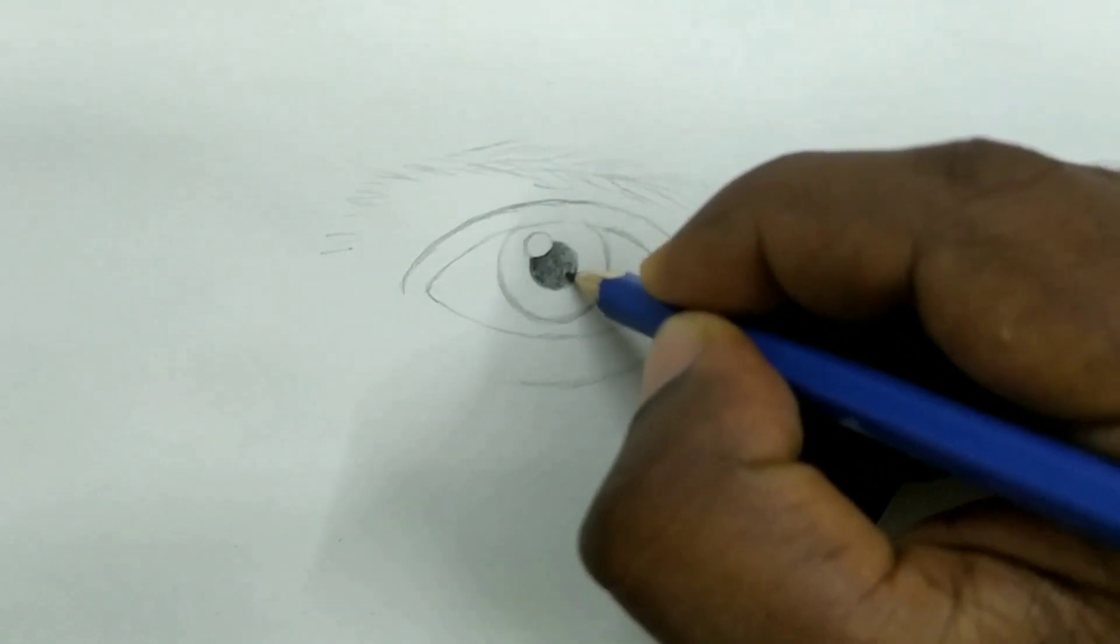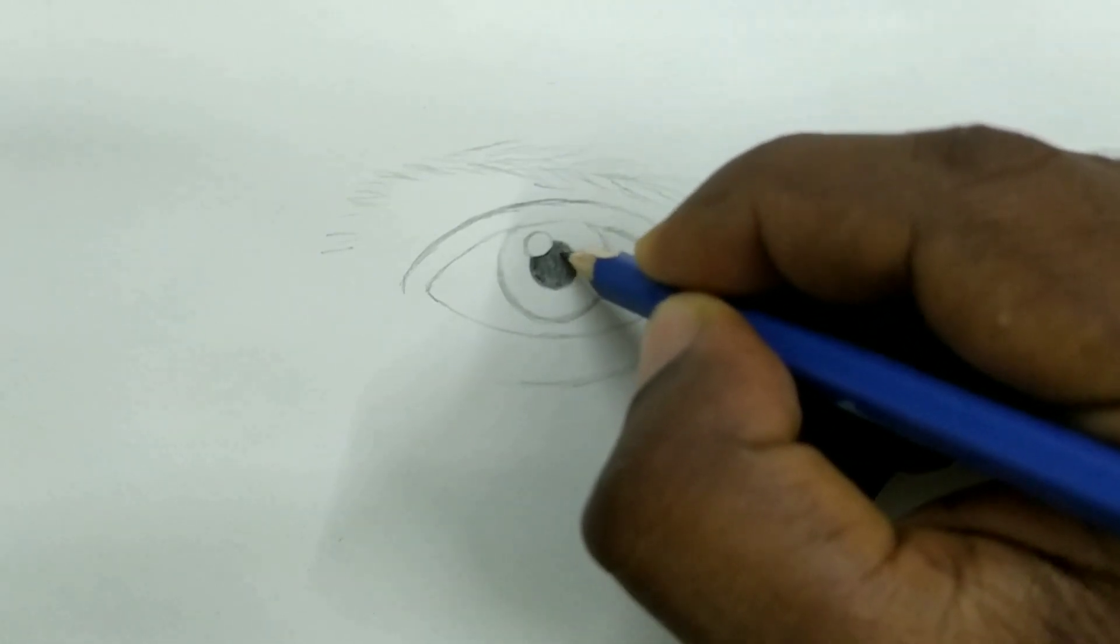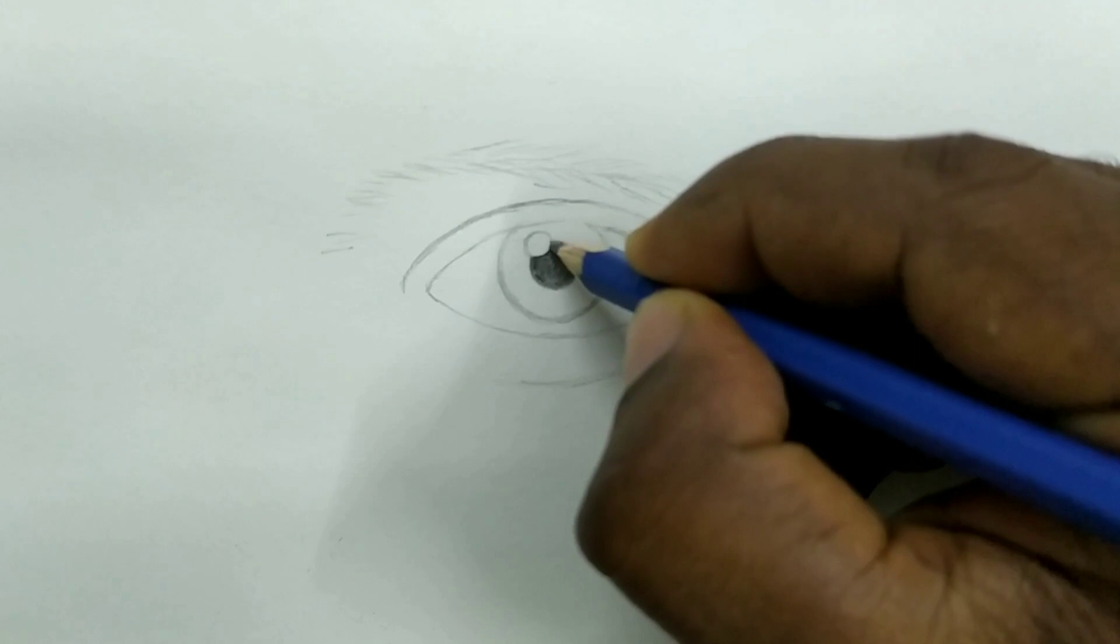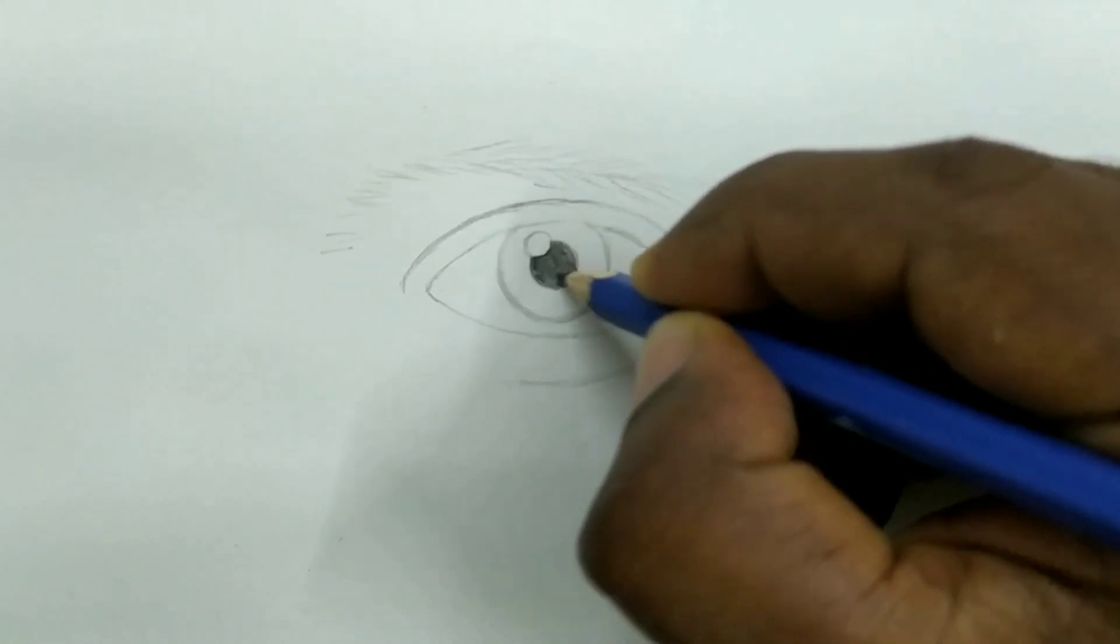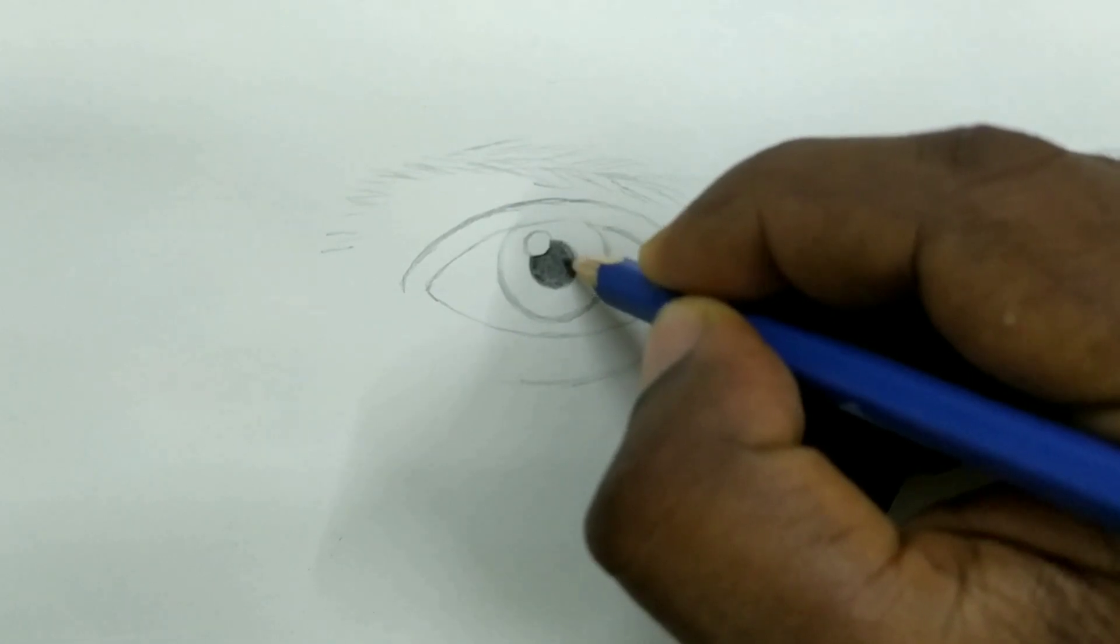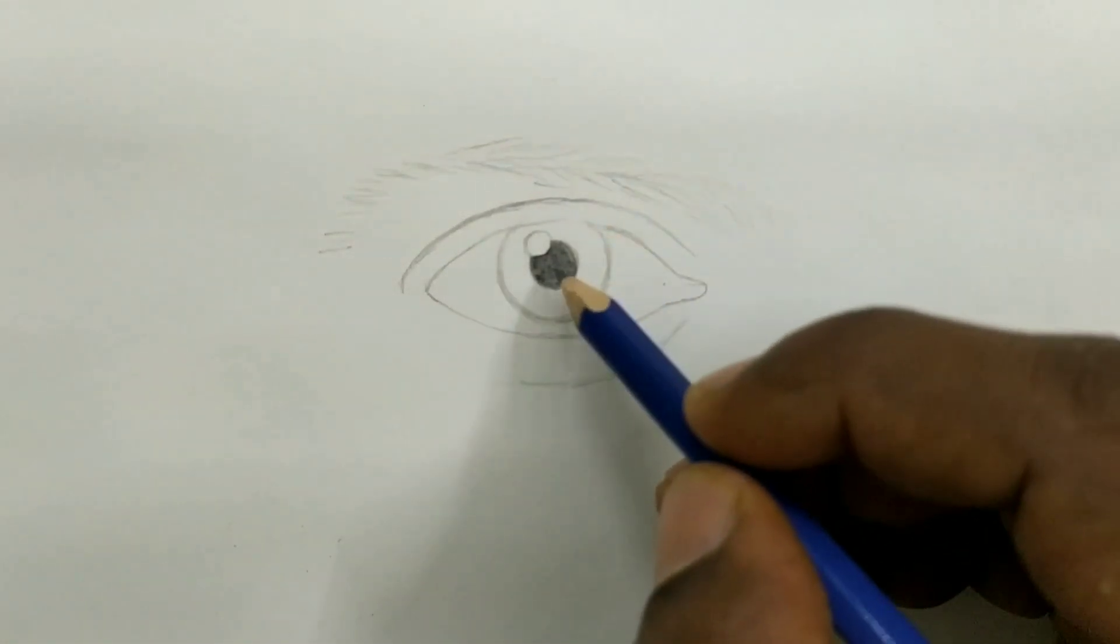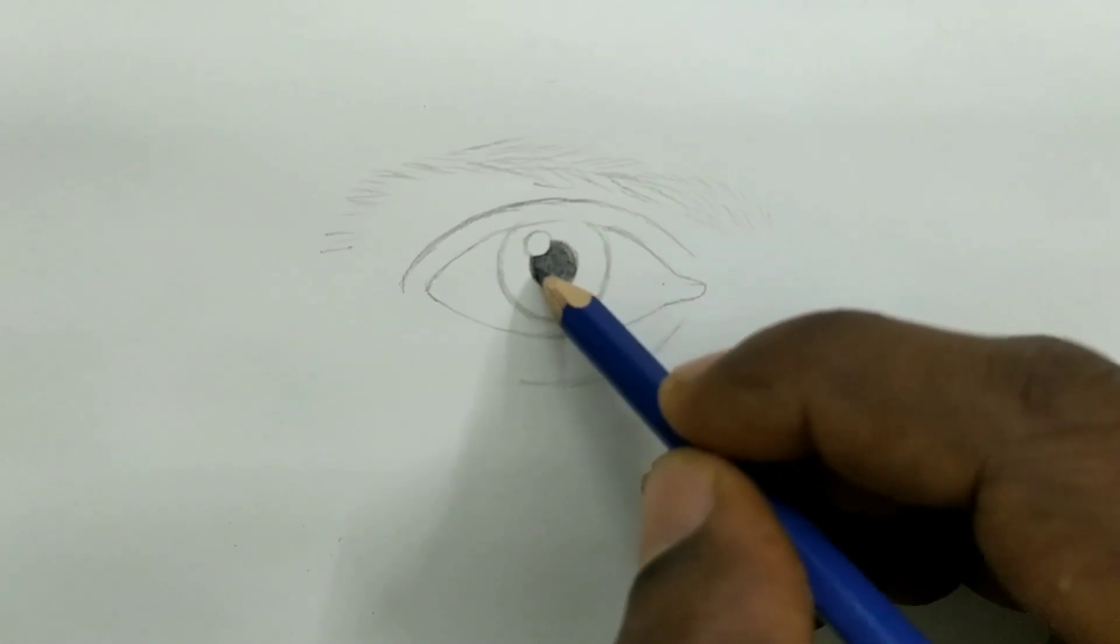White, because that is going to become our highlight. Later I will explain why it is lighter and the highlight is. Pupil will be the darkest area.